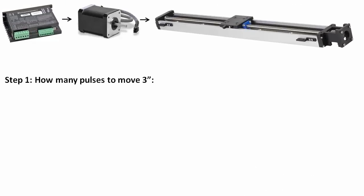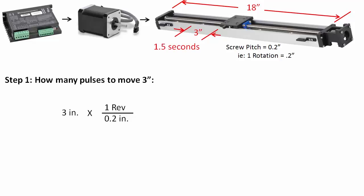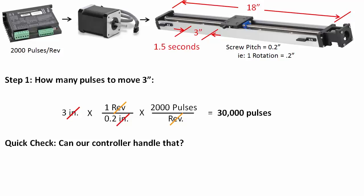Step 1. How many pulses do we need? Let's assume one of the moves we need to make on this 18 inch slide is to move the load 3 inches in 1.5 seconds. The pitch of the slide tells us each rotation moves the screw 0.2 inches and the drive is set up to issue 2,000 pulses per revolution so we'll need a total of 30,000 pulses to travel the 3 inches. Is that a reasonable number?